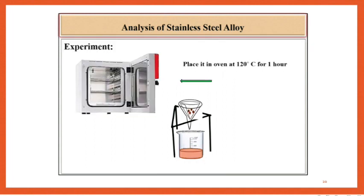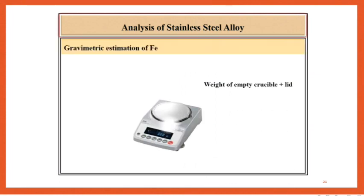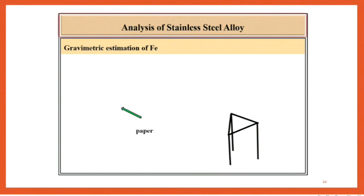Dry the precipitate of Fe(OH)3 by placing it in an oven at 120 degrees Celsius for 1 hour. Meanwhile, take the weight of the empty crucible with lid. Then incinerate the filter paper along with residue by folding and fixing with a pin.